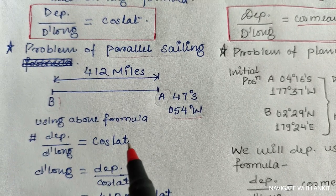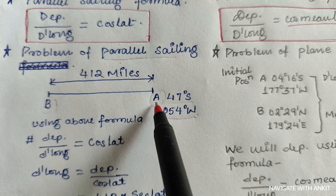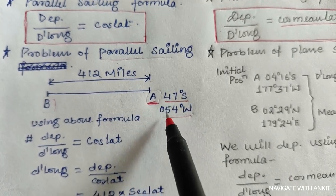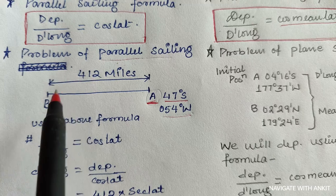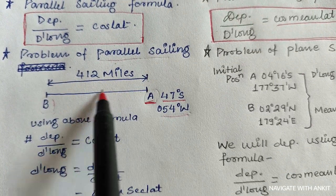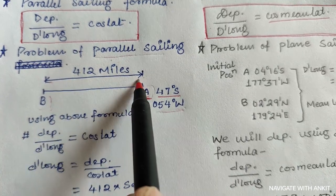Now we will solve one problem related to parallel sailing and one problem related to plane sailing. In this question it is given that initial position A is 47 degrees south and 054 degrees west, the final position is B, the course is 270 degrees, and the distance between these two points is 412 miles.